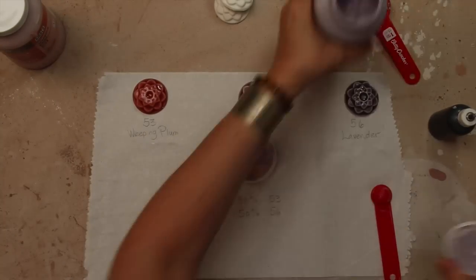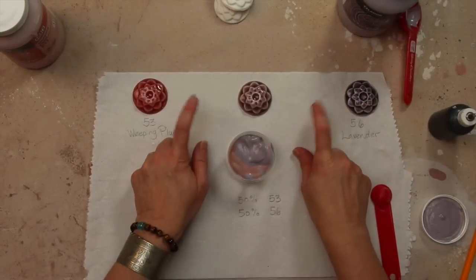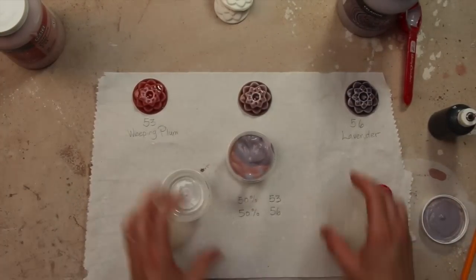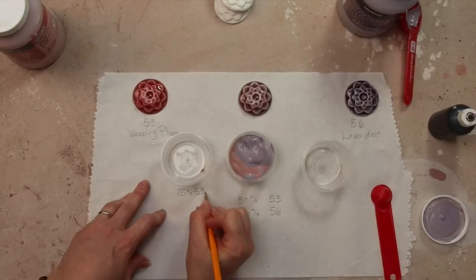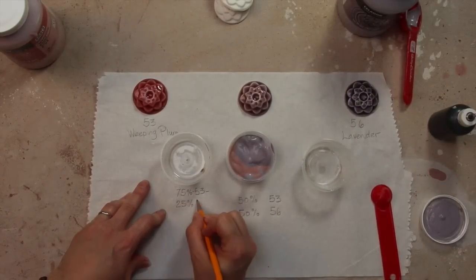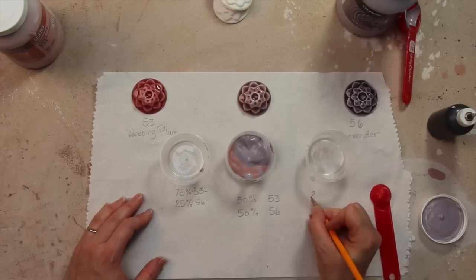To mix quarter steps, measure out the glaze in four parts, three parts to one part. First, we're going to do three parts Weeping Plum and one part Lavender, or 75% Weeping Plum to 25% Lavender.